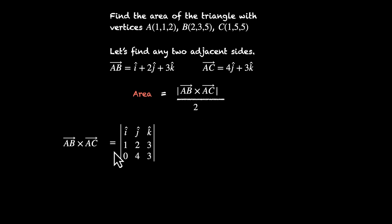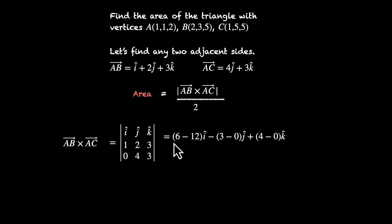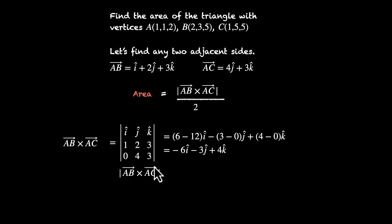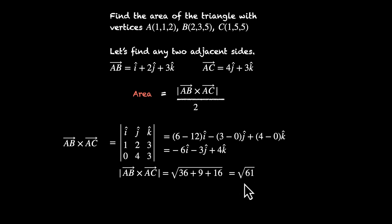The cross product equals the determinant of [î, ĵ, k̂; 1, 2, 3; 0, 4, 3]. Expanding: î(6 − 12) − ĵ(3 − 0) + k̂(4 − 0) = −6î − 3ĵ + 4k̂. Now we need the magnitude: √(6² + 3² + 4²) = √(36 + 9 + 16) = √61. So the area of this triangle is √61 / 2.